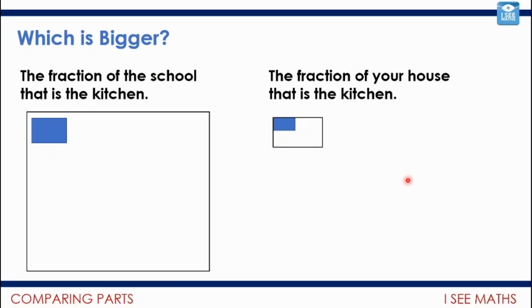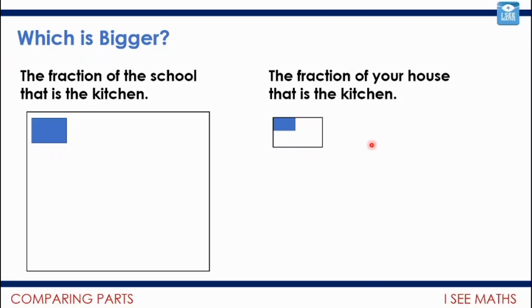Let's look at parts and wholes and their relative sizes. Consider the fraction of a school that is the kitchen compared to the fraction of a house that is the kitchen. A school kitchen is generally bigger than a home kitchen, but the fraction of the school that is the kitchen is smaller than the fraction of a home that is the kitchen — because the whole school building is so much larger, fitting far more kitchen-sized pieces inside it compared to a home.